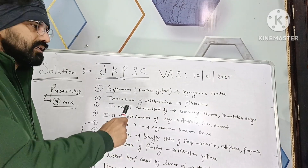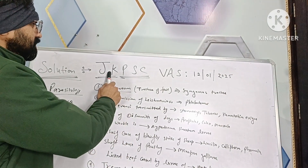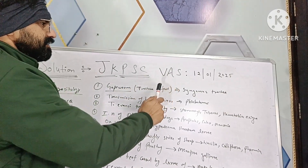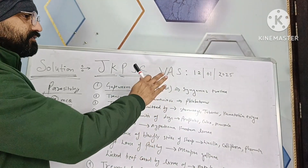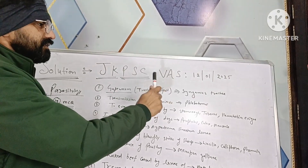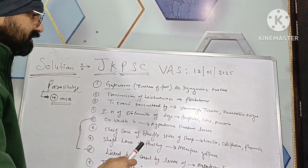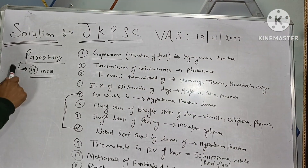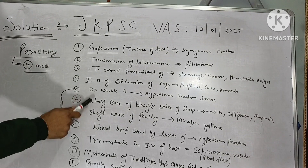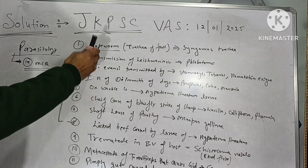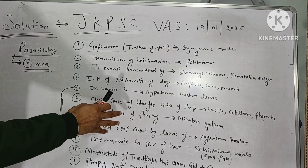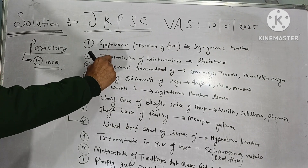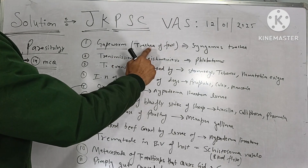In this lecture I am going to solve the Jammu and Kashmir PSC Veterinary Assistant Surgeon exam question paper which was held today in the early morning. First we'll see the parasitology section where 14 MCQs have been asked, and these are simple etiology-based MCQs. The first question was on gape worm.